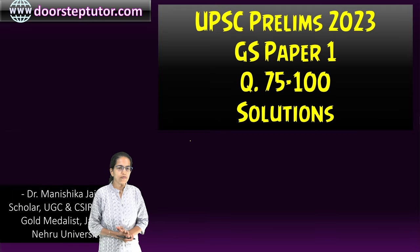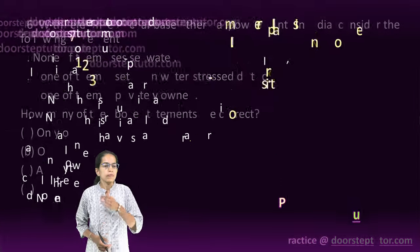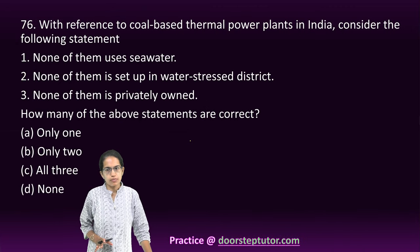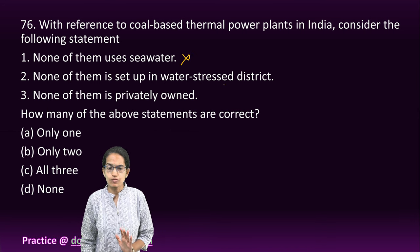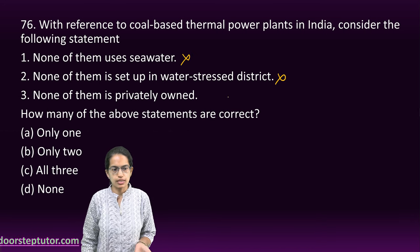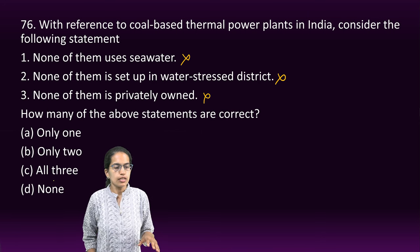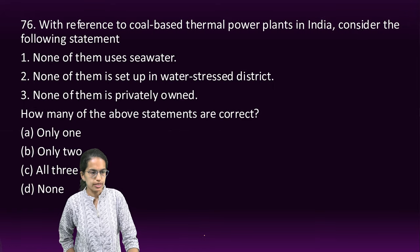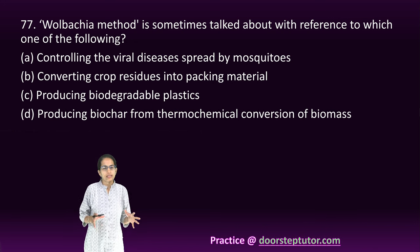Let's cover the last paper for GS Paper 1 — the last 25 questions. Beginning with the question on cold-based thermal power plants: none of the statements is correct. Water is incorrect, water stress district is incorrect, and some plants are also privately owned like Adani — so all three are incorrect and none of them is the correct answer.